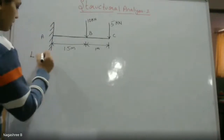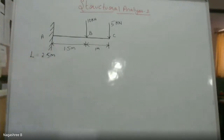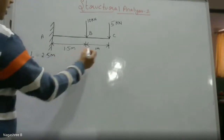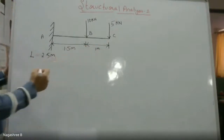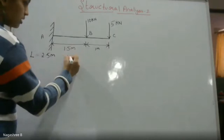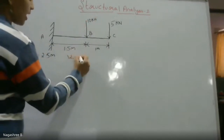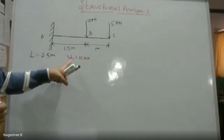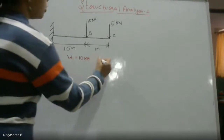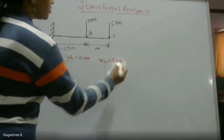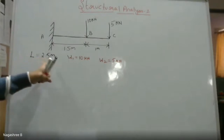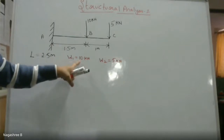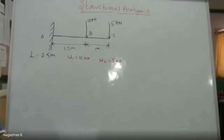The overall beam length is 2.5 meters, wherein the distance from A to B is 1.5 meters and the distance from B to C is 1 meter. I consider W1 as 10 kN — that is the concentrated load at point B — and W2 as 5 kN. So L equals 2.5 meters, W1 equals 10 kN, and W2 equals 5 kN.